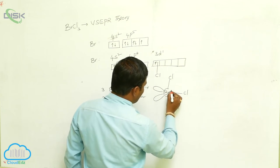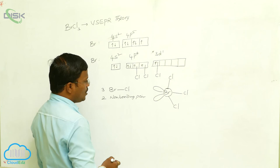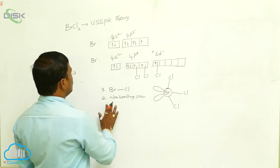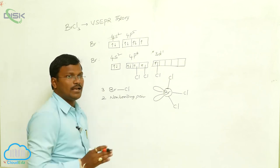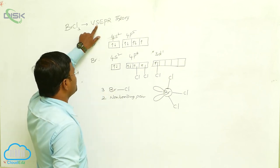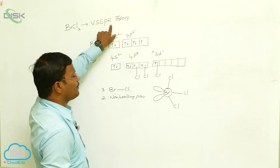This is the expected structure for bromine trichloride, explained using valency shell electron pair repulsion theory.